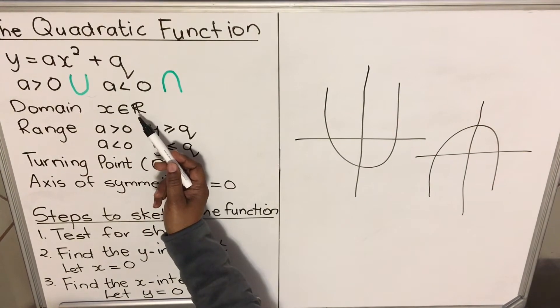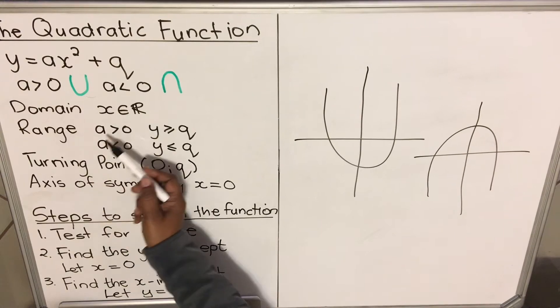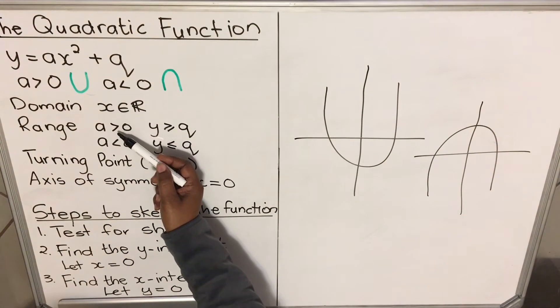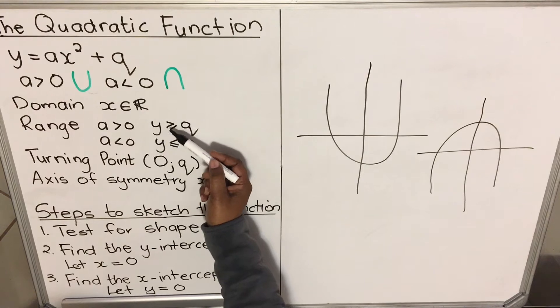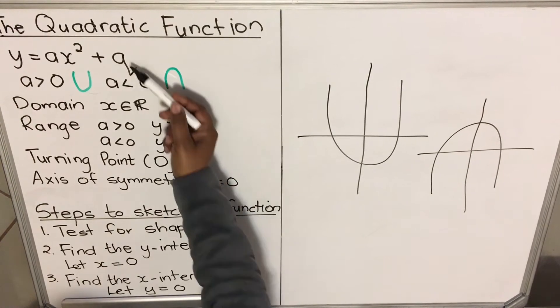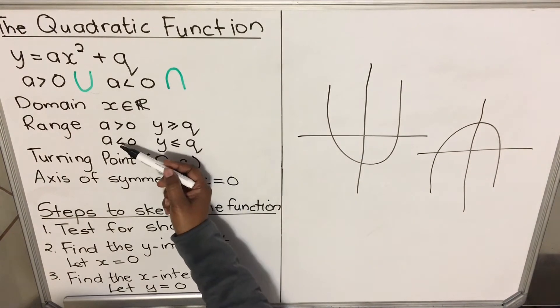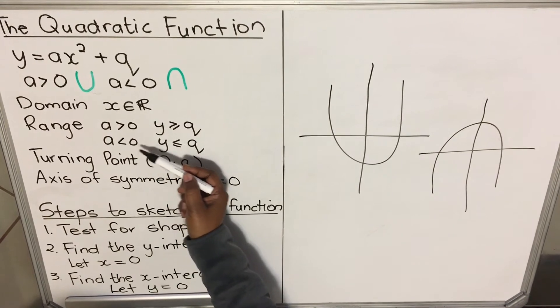Your range depends on the shape also. When it's positive, when it's facing up, y is greater or equal to q—that number that will be there. When it's negative, facing down, y is less or equal to q.